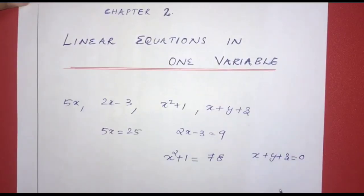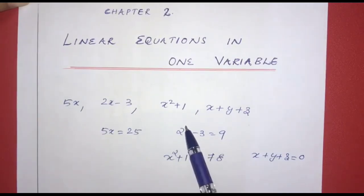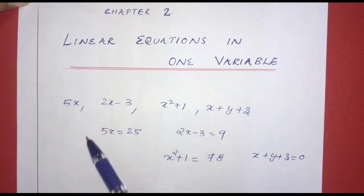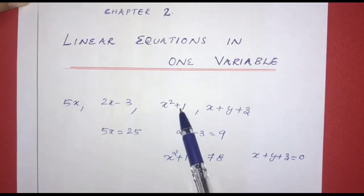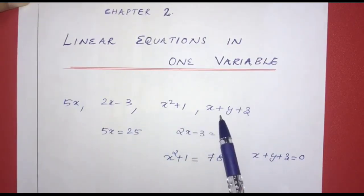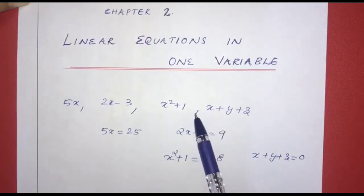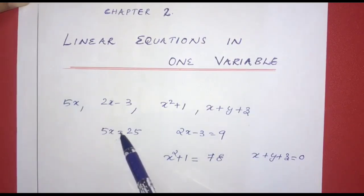In the next step, linear equations in one variable. In the previous class, we have learned the equations of algebraic expressions. What are algebraic expressions? We write 5x, 2x-3, x² plus 1, x plus y plus z. All these are algebraic expressions. In these expressions, we write an equal to sign. When we write an equal to sign, we call them equations.